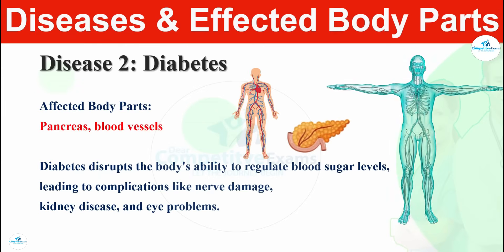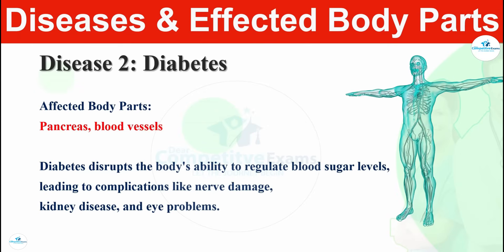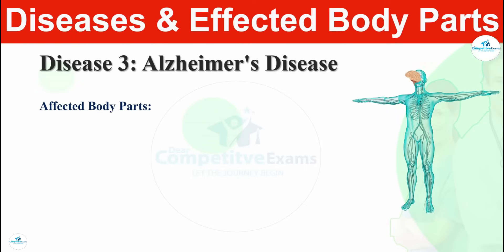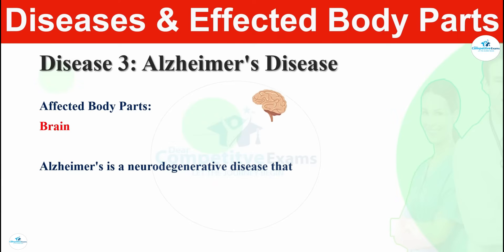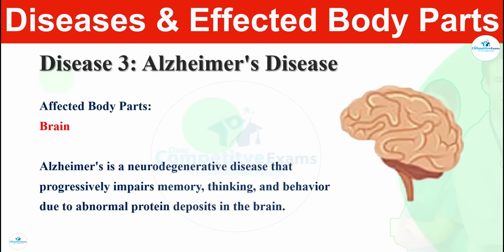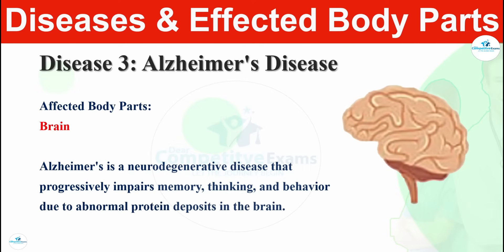Diabetes increases issues like nerve damage, kidney disease, and eye problems if not treated on time. The third disease is Alzheimer's disease, and the affected body part is the brain. Alzheimer's is a neurodegenerative disease that progressively impairs memory, thinking, and behavior due to abnormal protein deposits in the brain.